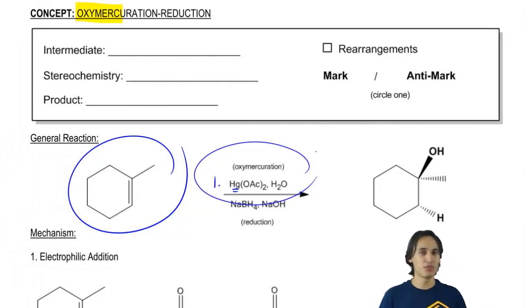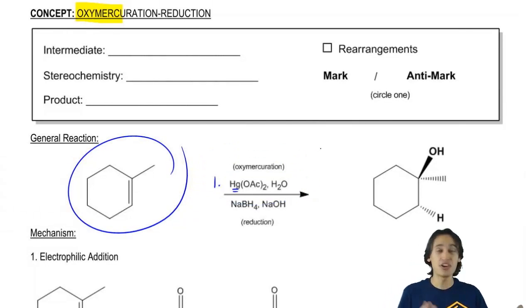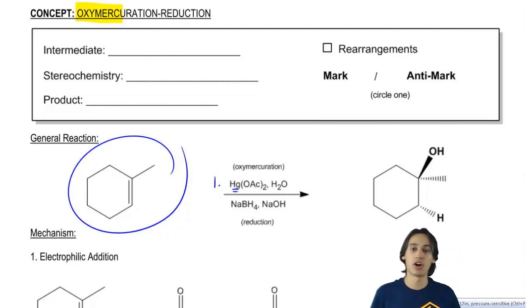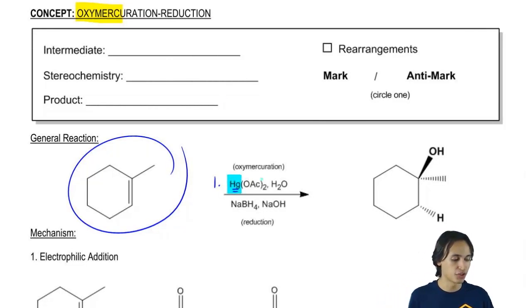Now if you're confused how you'd remember this, well, eventually you are going to need to memorize this. But one way that I like to maybe make it simpler is that notice that the word oxymercuration has mercury in it, mercury. And notice that the reagent of oxymercuration is Hg, which is mercury.